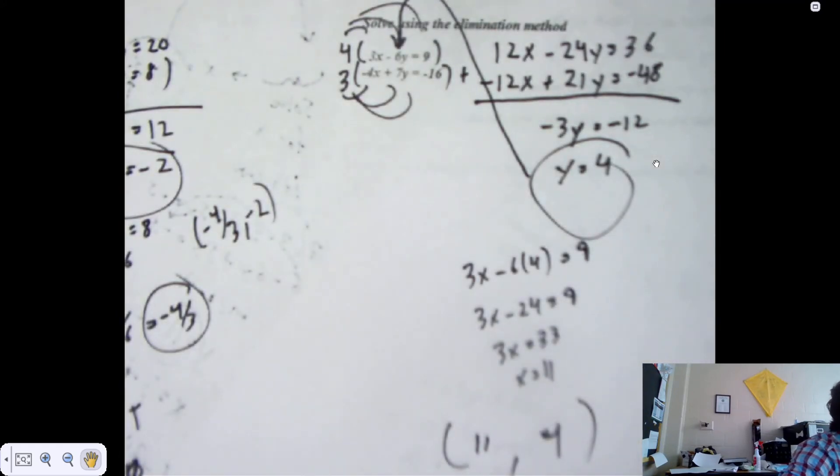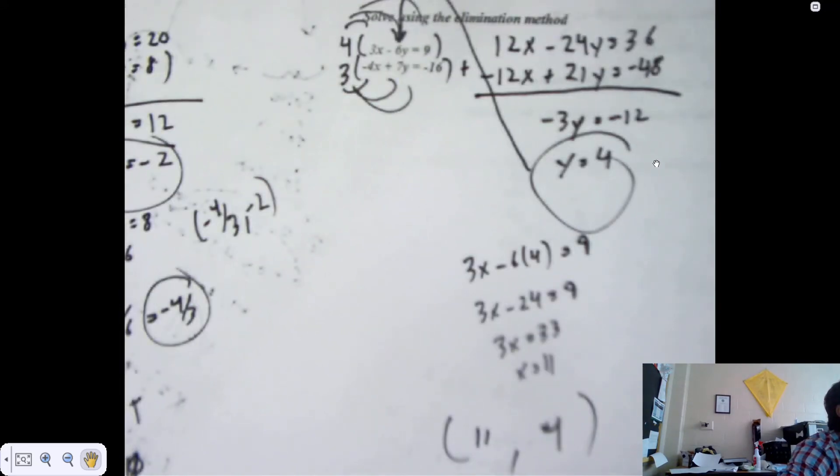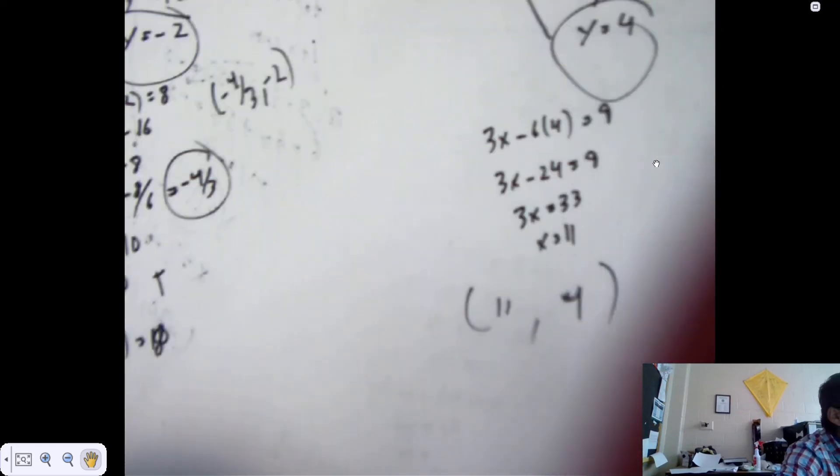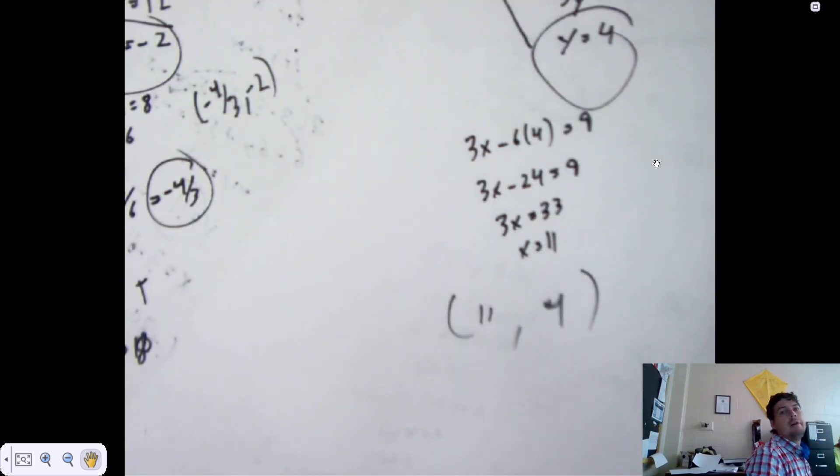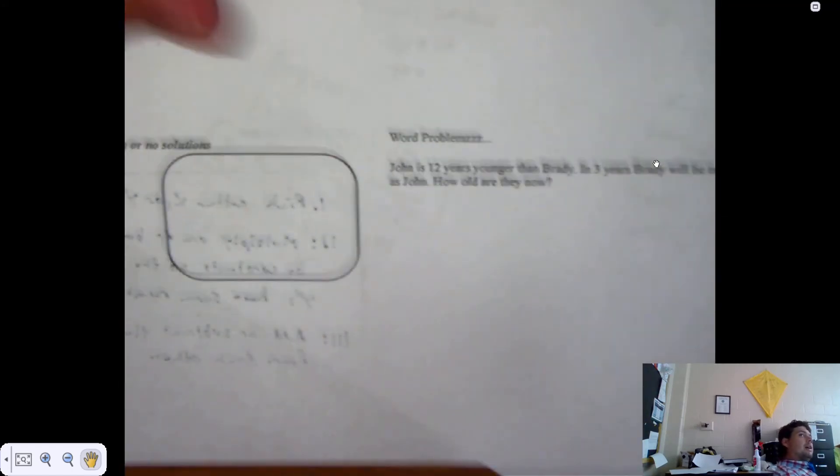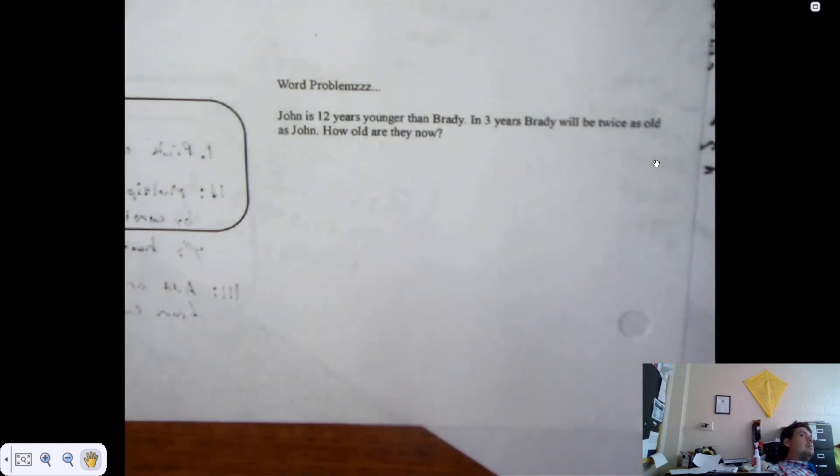I'm not going to talk about the one with no solutions. I'm going to talk about the word problem. Before I do, any questions? I'm not trying to rush you. Just constrained for time. That's typical math class. Never enough time in math class. So here we have a word problem. John is 12 years younger than Brady. In three years, Brady will be twice as old as John. How old are they now?